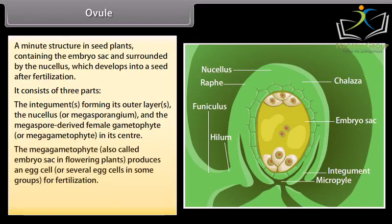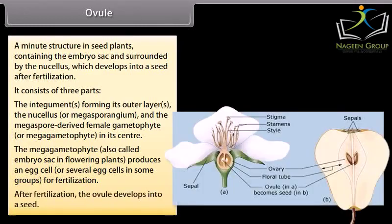The megagametophyte, also called embryo sac in flowering plants, produces an egg cell or several egg cells in some groups for fertilization. After fertilization, the ovule develops into a seed.